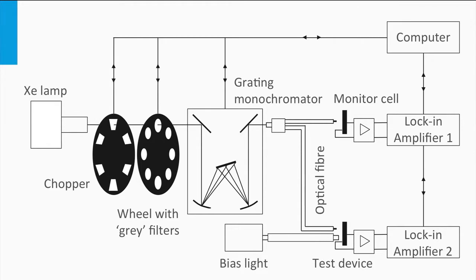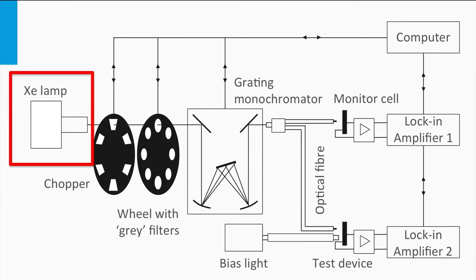EQE spectra are measured using an EQE setup, also called spectral response measurement. Such a setup needs a wavelength-selective light source, a calibrated light detector, and a current meter. A xenon lamp is a standard light source used in EQE setups, as it emits photons in the same spectral range of interest of the solar spectrum.